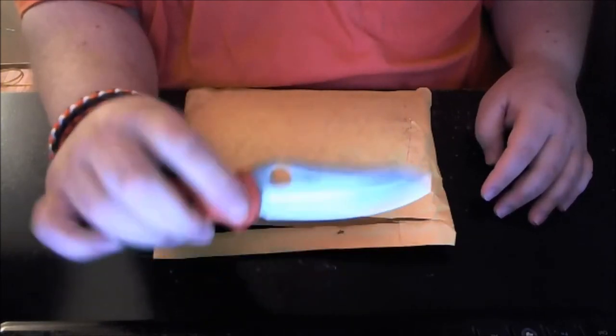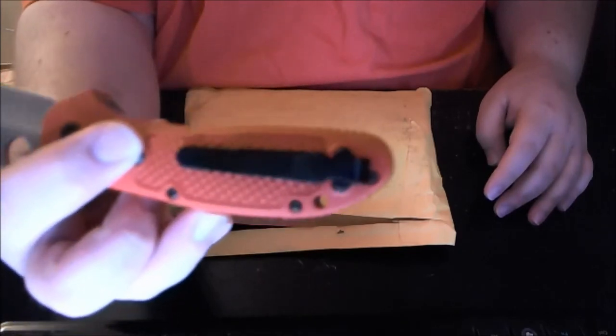Okay, the orange Griptilian. But I did take the sheep's foot blade off and put it on the Griptilian. And I have a deep carry pocket clip from the 275 Adimus on here. So this is a Franken-Griptilian. Let's see what we got here.